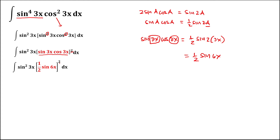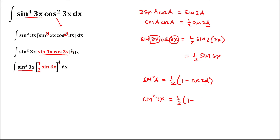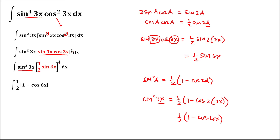Using the identity sin²(x) = ½·(1 − cos(2a)), we apply this to sine squared 3x. With a = 3x, this is equal to ½·(1 − cos(6x)). So sine squared 3x equals ½·(1 − cos(6x)).